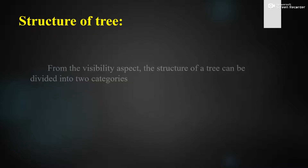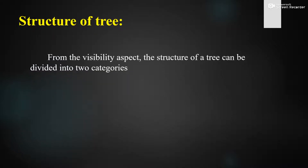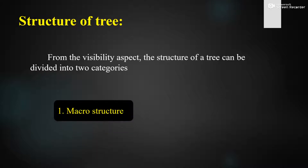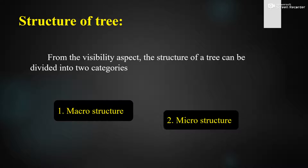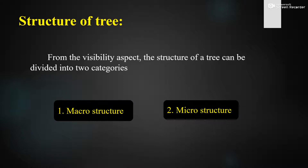From the visibility aspect, the structure of a tree can be divided into two categories: the first one is macro structure and the second one is micro structure.